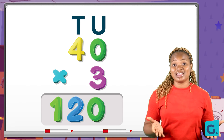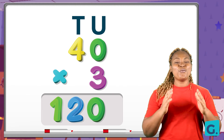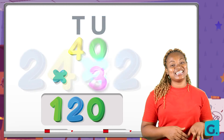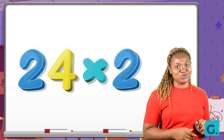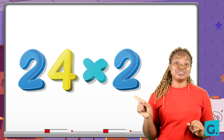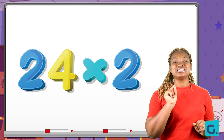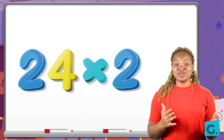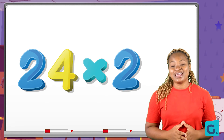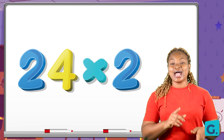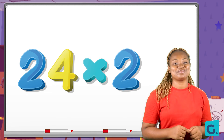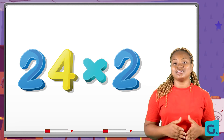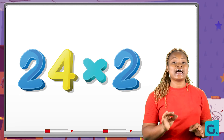Forty multiplied by three is going to give us one hundred and twenty. Great! Can you try this next one on your own? I have here on the screen twenty-four times two. How do you want to do this? You can pause this video and work it out. All right, let us solve this together — twenty-four times two.